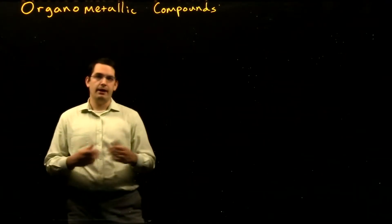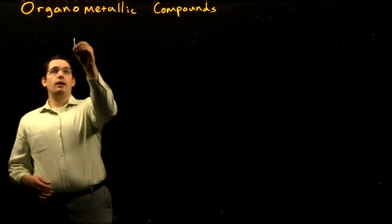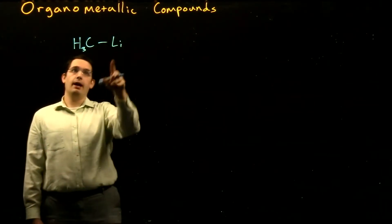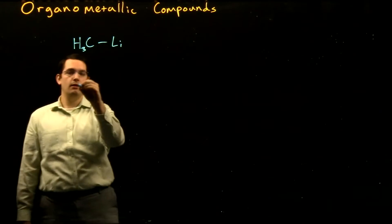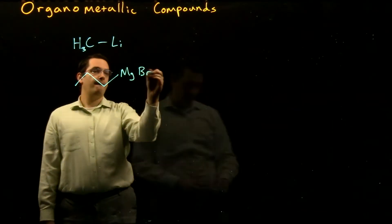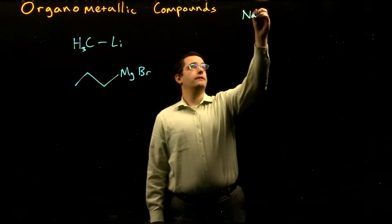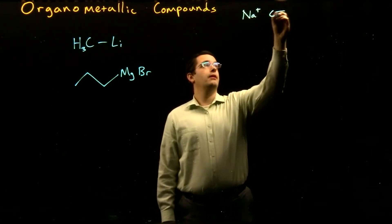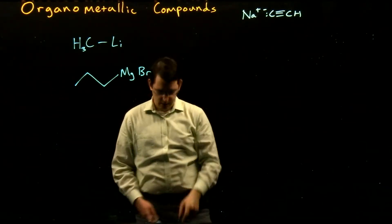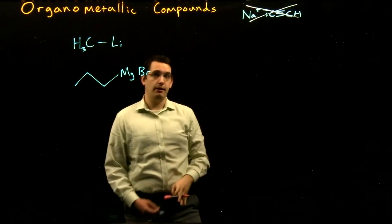Organometallic compounds are compounds that contain carbon-to-metal covalent bonds. We can have a metal such as lithium bonded to a carbon, or something like magnesium bonded to a carbon. Compounds that contain metal-to-carbon ionic bonds, such as alkyne anions, are typically excluded because they aren't covalent bonds. We wouldn't consider these ionic-based compounds as part of our organometallic compound class.